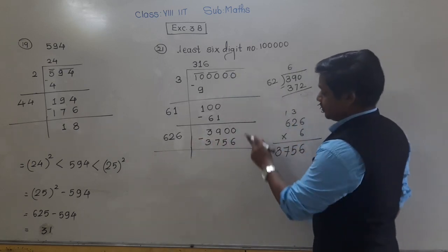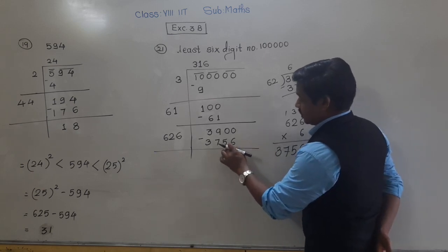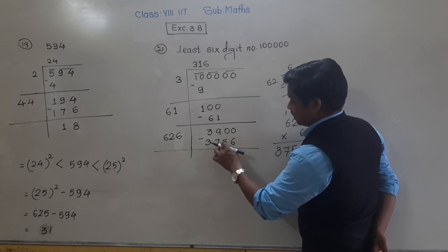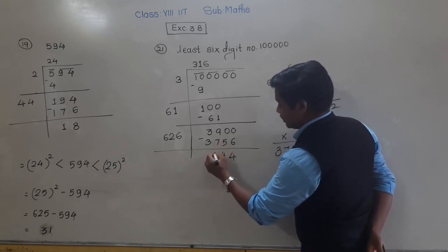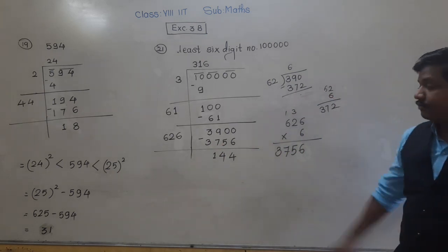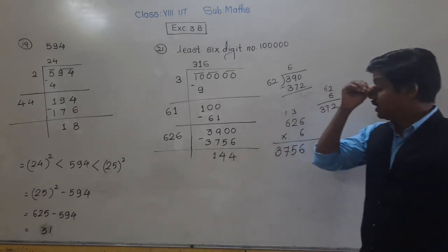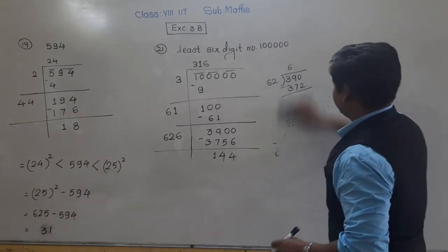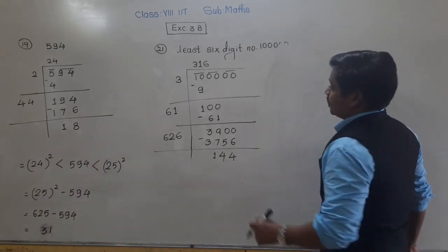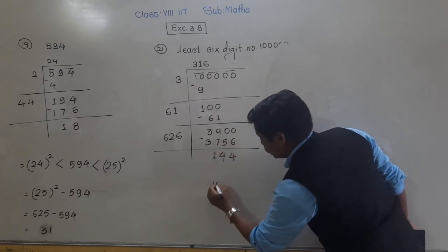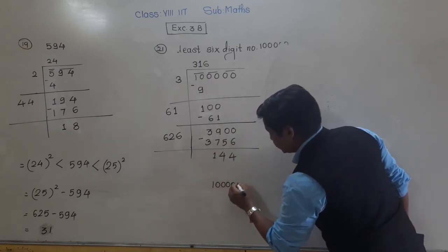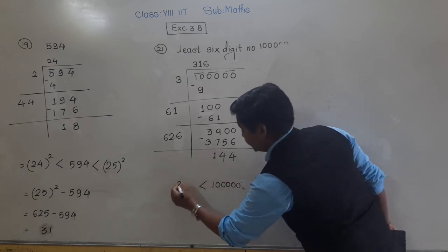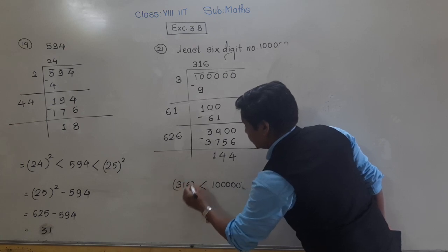Subtract: 10 minus 6 is 4; 10 minus 6 is 4 again; 9 minus 8 is 1; 3 minus 0 is... wait, the remainder is 44. By this calculation we come to know that 1 lakh (the smallest six-digit number) is greater than the square of 316.